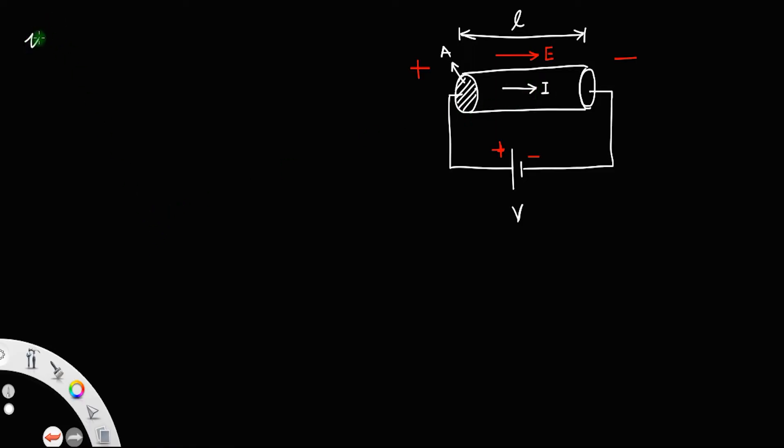Then we have the relationship between the electric field, potential difference, and length. We know that electric field will be potential difference divided by length, which implies potential difference will be E times L.